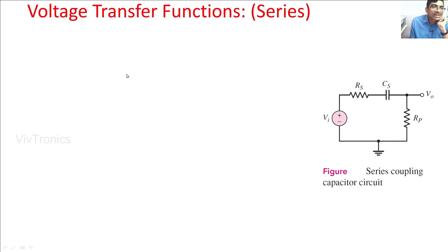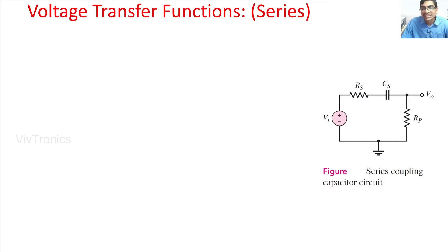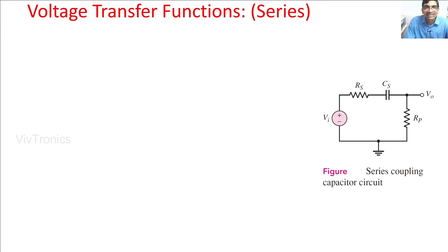Next we discuss the voltage transfer functions of series and parallel capacitance circuits. An amplifier circuit contains all types of capacitors — coupling capacitors, bypass capacitors, load capacitance, etc. — making circuit analysis very complex. To simplify the analysis, we divide the complex amplifier circuit into small sections: an input side section, output side section, and transistor section. We then get the transfer function of each section and combine them to get the complete transfer function of the amplifier.